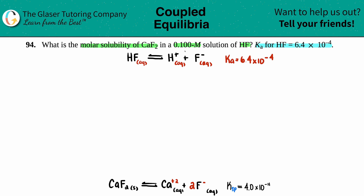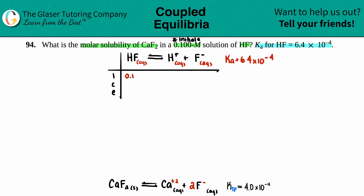We started with 0.100 molarity of HF, which tells us this is the initial concentration. Time for an ICE table. Initially we have 0.100 M of HF, and no initial H⁺ or F⁻, so those are zero. For the change row: HF decreases by x, while H⁺ and F⁺ each increase — it's a 1:1:1 ratio, so the changes are −x, +x, and +x.